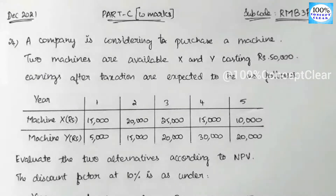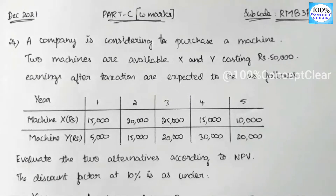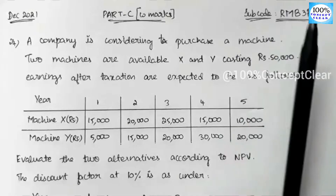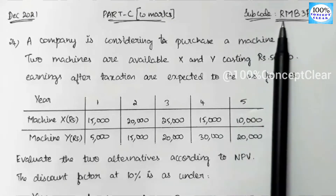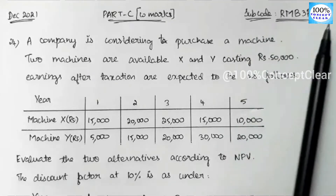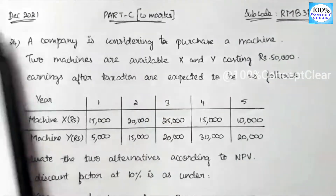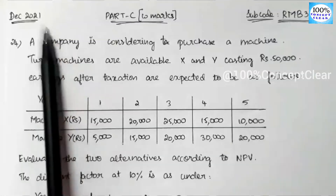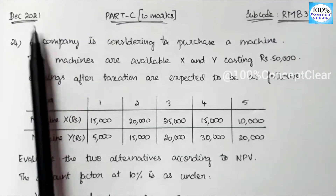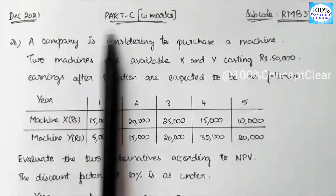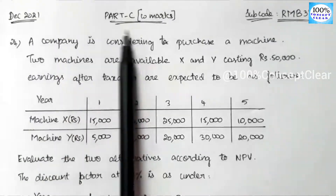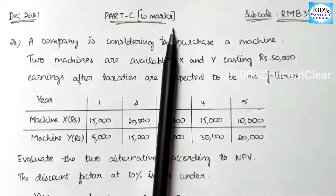We will have a Financial Management subject here. The subject code is RMB3P. We will have a December 2021 question paper, Part C, 10-mark sum.